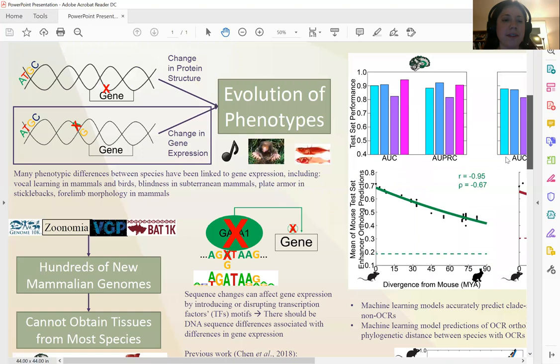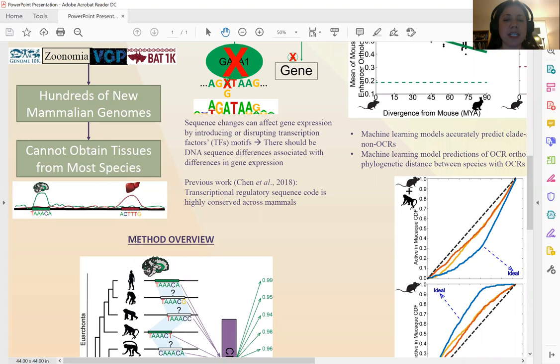Many genomes have recently been sequenced in many different mammals, enabling us to study evolution in unprecedented ways. However, studying gene expression evolution remains a challenge because most regulatory elements act in ways that are tissue-specific, meaning that we need to assay them in different tissues in many species, and we cannot actually obtain most tissues in most species.